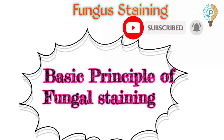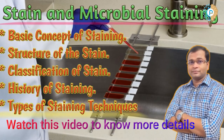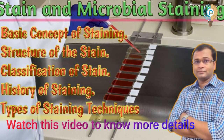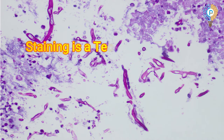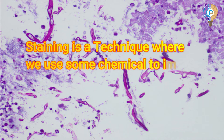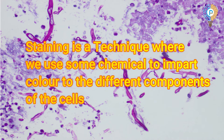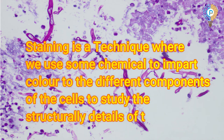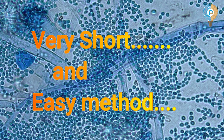Coming to my second point, that is the basic principle of fungus staining. Before starting this point, we all have to know what is the stain and what is staining. Staining is a technique where we use some chemicals to impart color to the different components of the cell to study the structural details of the cell. The chemical which we use is called stain and the process is called the staining process.